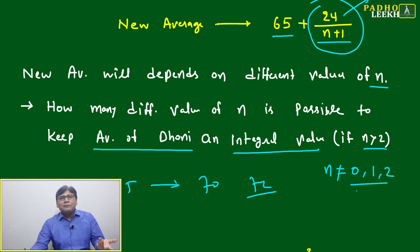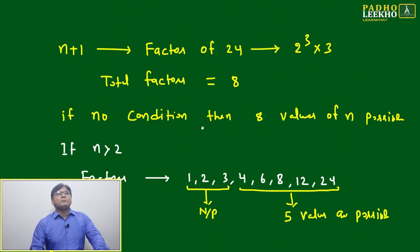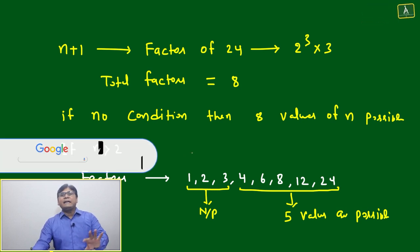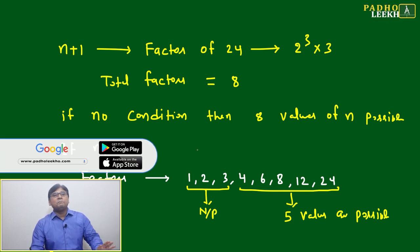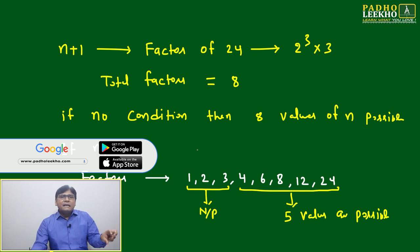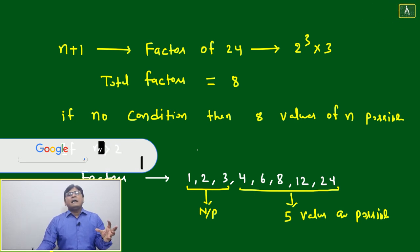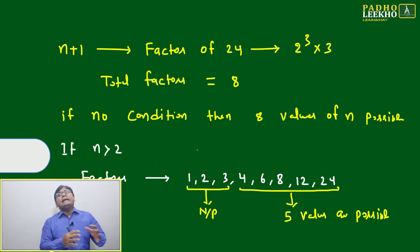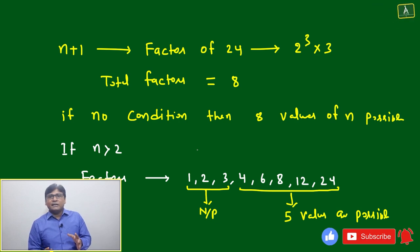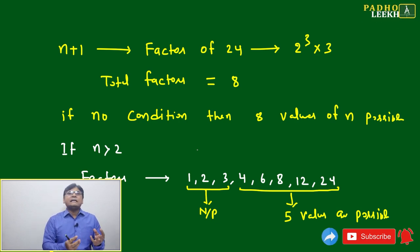Then how to understand this? We will apply number concepts. I'm telling you, number is applicable everywhere. Without number concepts, you will feel problems solving any CAT level problem, because number is a universal concept. It can be merged with any mathematical or data analysis concept.